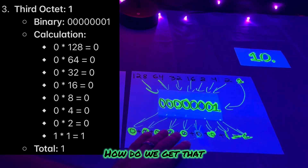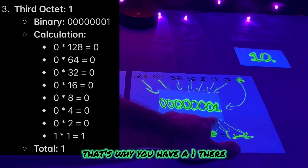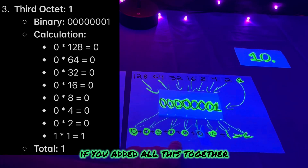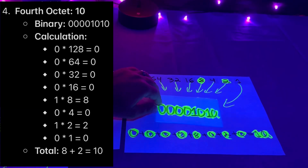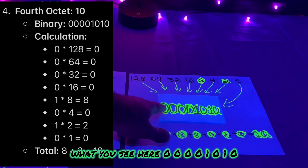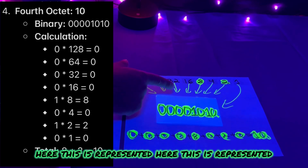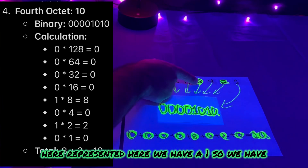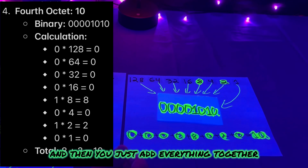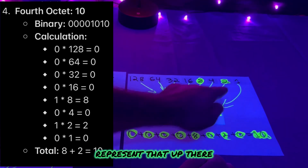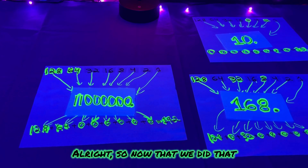For 1, the binary is 00000001 — only the last placeholder is being used, representing a value of 1. For 10, the binary is 00001010. The ones in the appropriate positions represent 8 and 2. Adding 8 + 2 equals 10. That's how you get each octet value from its binary representation.